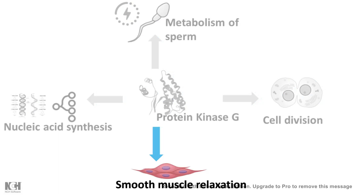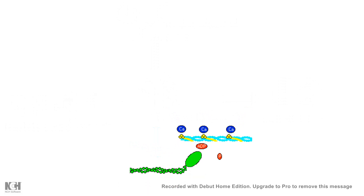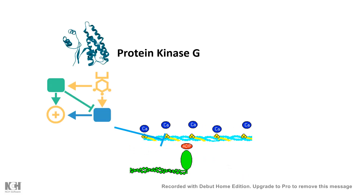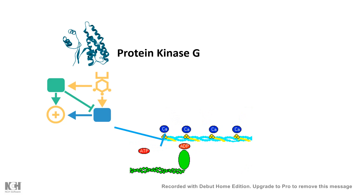Today we look at how smooth muscle relaxation is induced by protein kinase G. Protein kinase G is activated by cyclic GMP binding, which is facilitated by nitric oxide-dependent signaling. At the cellular level, protein kinase G phosphorylates several targets that prevent cross-bridge formation. For a muscle to contract, cross-bridges need to form — protein kinase G prevents this via a complex molecular pathway, so the smooth muscle cells cannot contract and they relax.